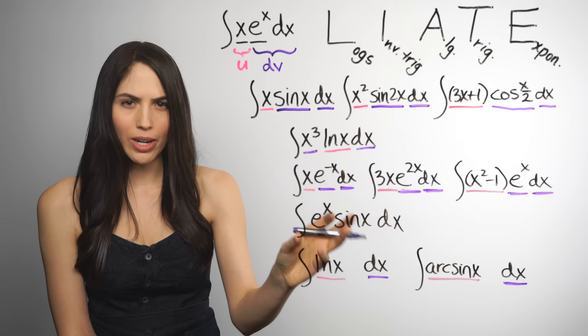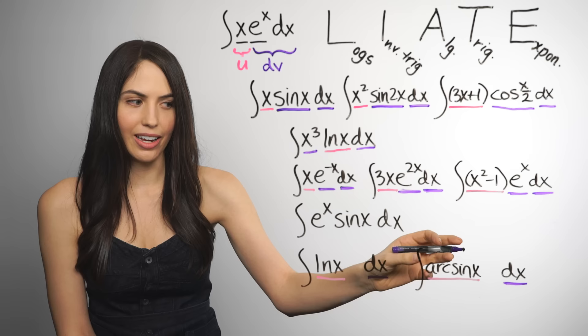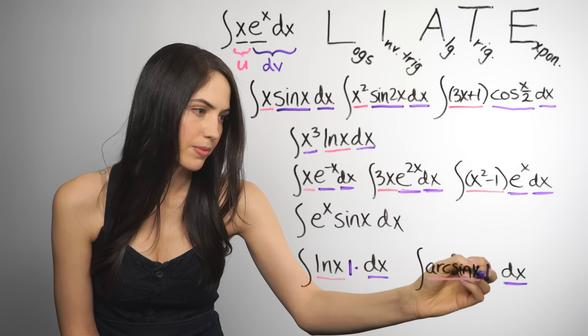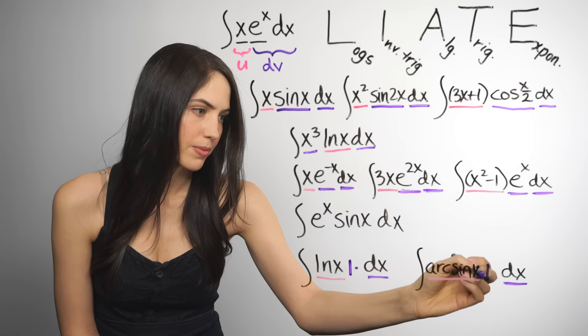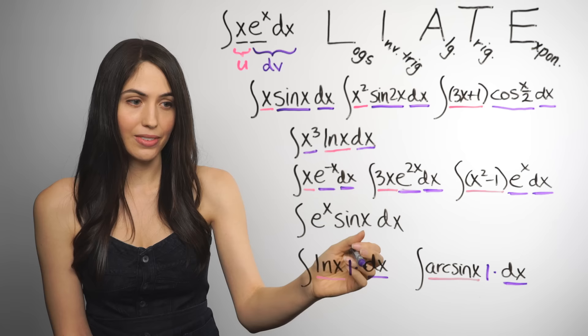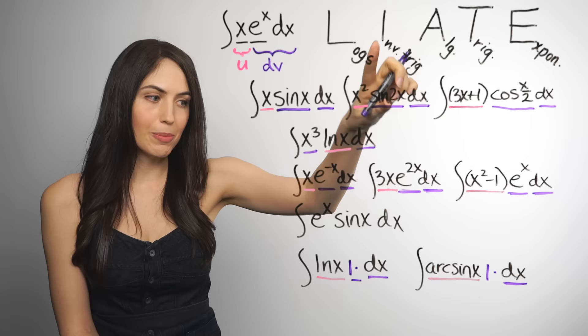And one final kind. If you just have one term in the integrand, ln x, arc sin x, turns out you can use integration by parts on something like this because the dx can be thought of as 1dx and can be thought of as an algebraic term. And if you do that, like here you'll have algebraic and log. So log will be your u, and the 1dx will be your dv. Arc sin x is an inverse trig. The I in our trick comes before algebraic. So that's the u. And 1dx is your dv.